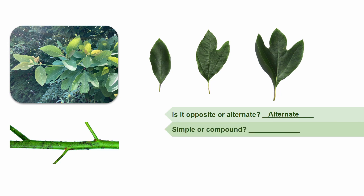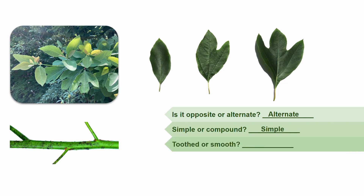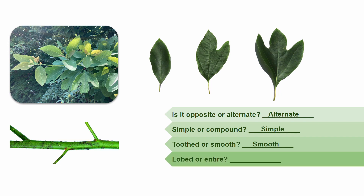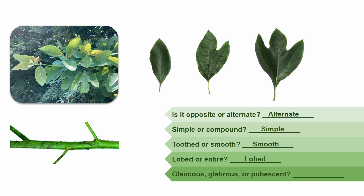Are the leaves simple or compound? They'd be simple — they are not broken into leaflets. Are the leaves toothed or smooth? They are smooth; the margin of the leaves don't have a saw-like texture. Are the leaves lobed or entire? These leaves are lobed. This particular species is interesting because it has three different leaf shapes. The first is single-lobed, which could be classified as entire. However, it also has two-lobed and three-lobed leaves. Are the leaves glaucous, glabrous, or pubescent? The leaves are glabrous, but they can also sometimes be slightly pubescent. You wouldn't be able to see that from this photo, so glabrous is the right answer.